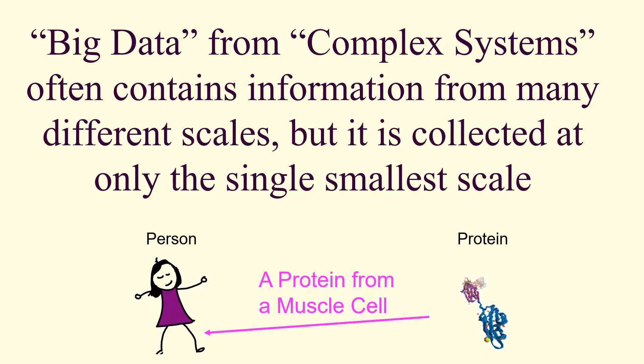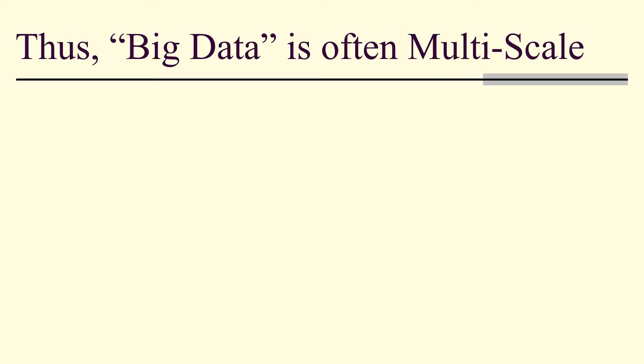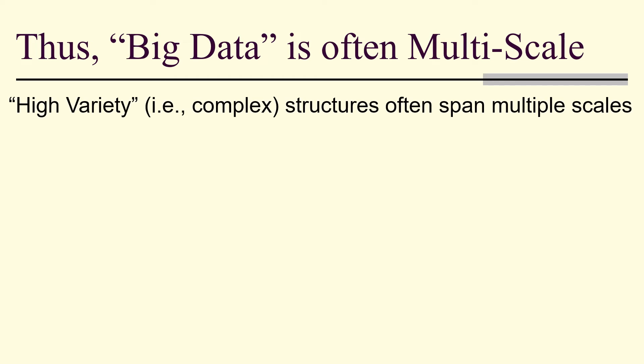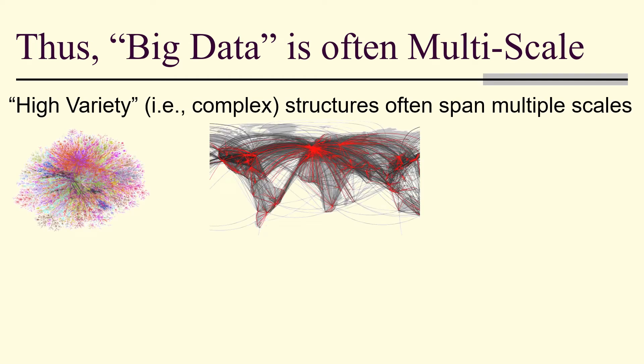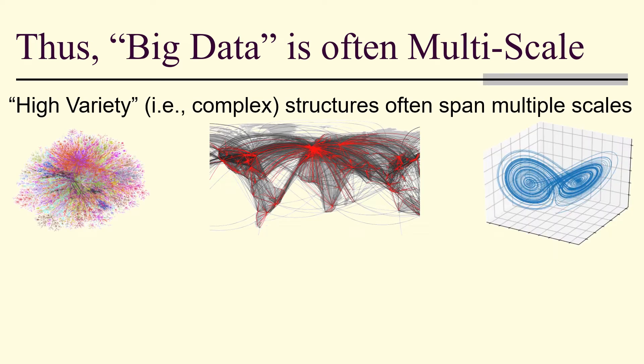So, big data from complex systems often contains information from many different scales. But for purposes of resolution of the smallest scale, that's the scale at which it's collected.